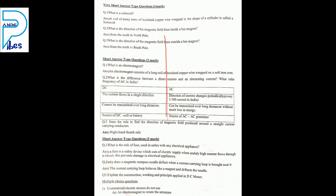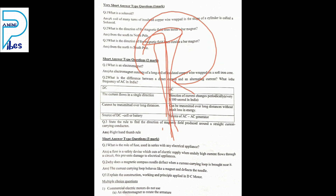In Maxwell's screw rule: when you tighten the screw, the screw rotates in the right side direction and slowly goes inside the stick. The movement of the screw shows the current direction, and the rotation of the screw shows the direction of the magnetic field.